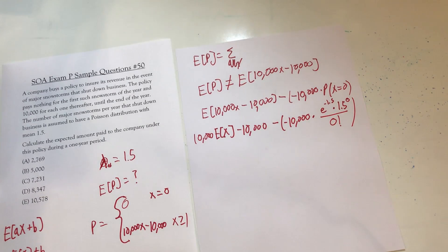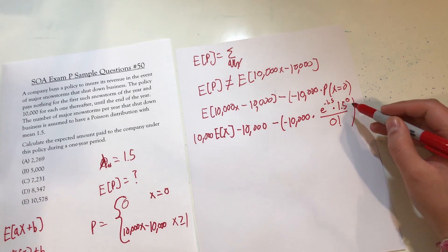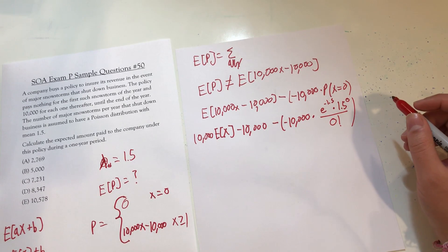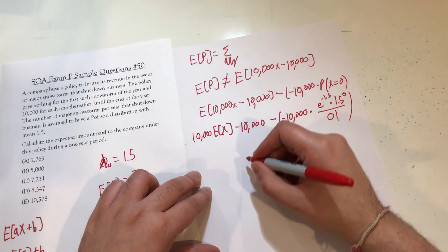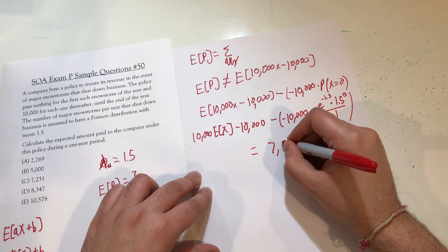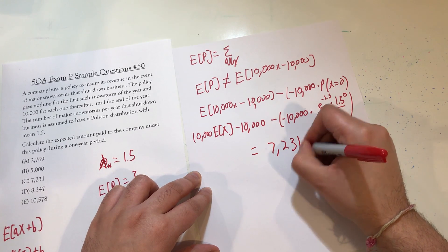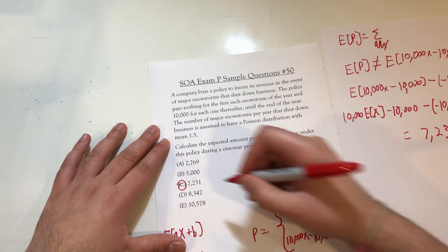Substituting in 1.5, I'll just put that into my calculator. 10,000 times 1.5 minus 10,000 minus negative 10,000 times e to the negative 1.5. This will be 1, this will be 1. And that gets me a final answer of 7,231, which lines up with answer choice C.